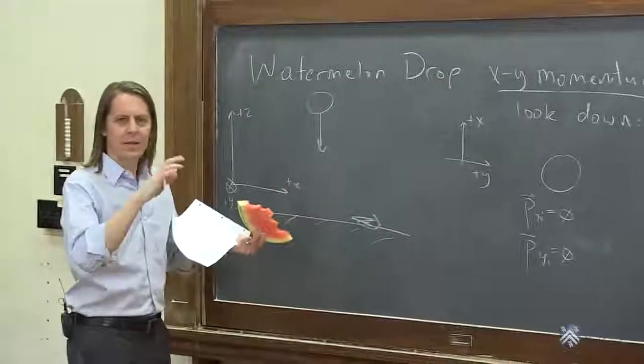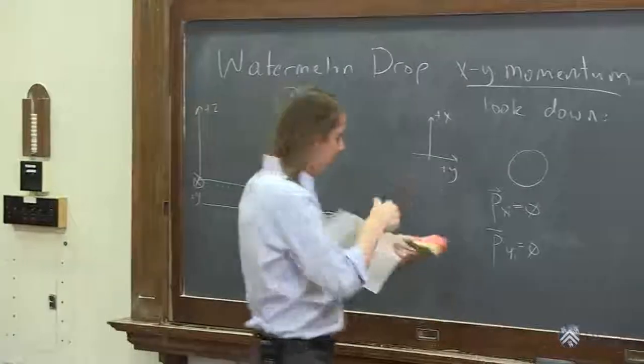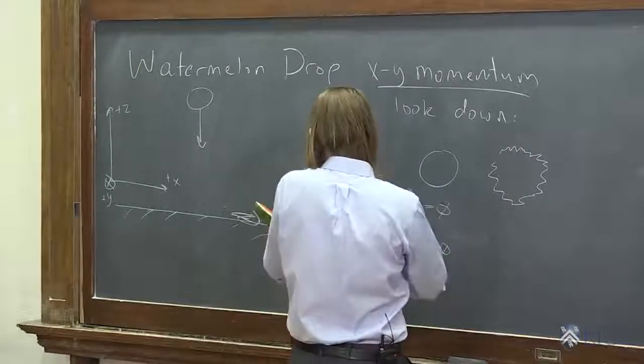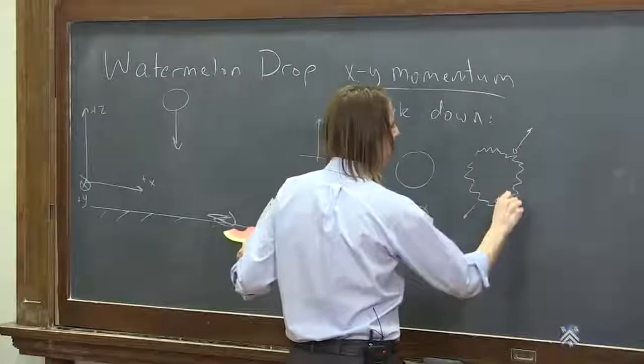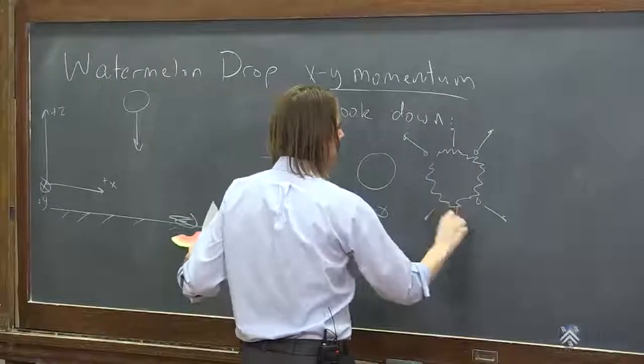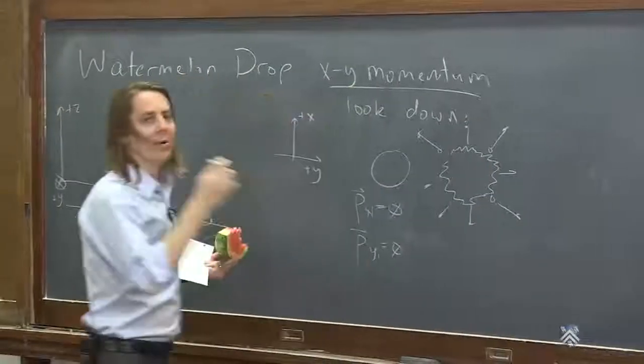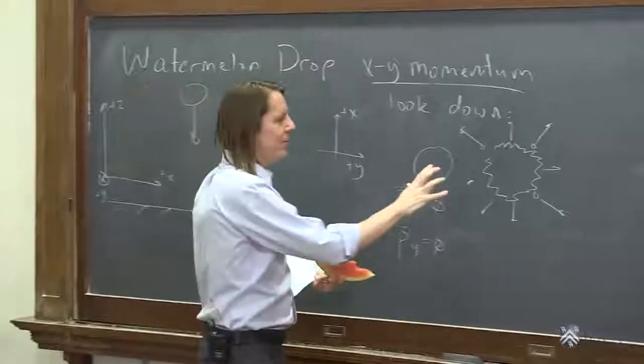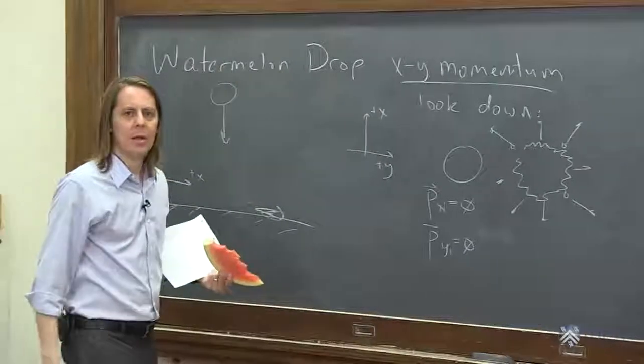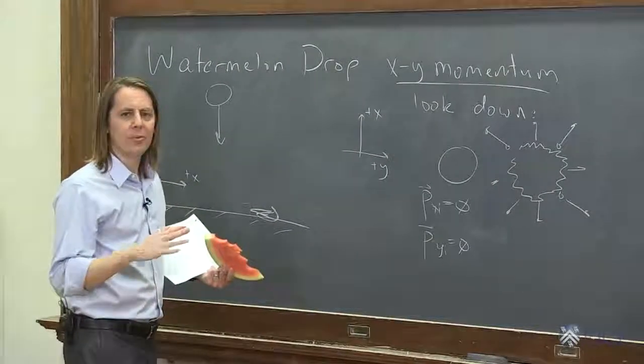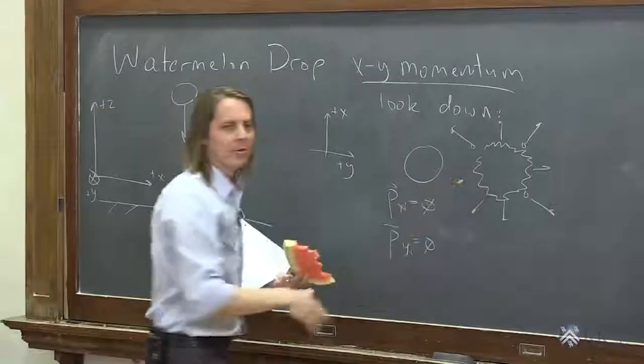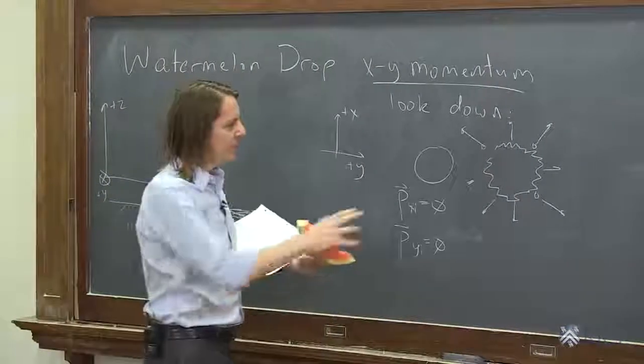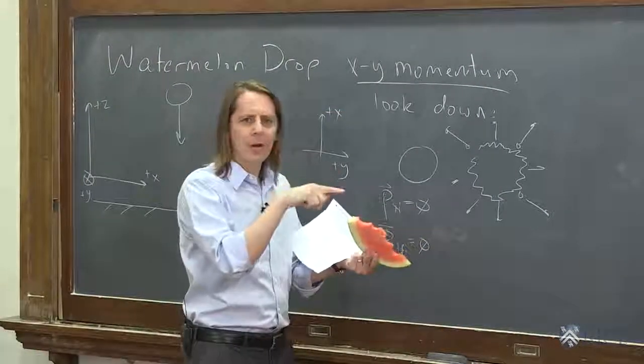And then it hit the ground and it smashed. Suddenly stuff goes everywhere. There's this explosion. Chunks flew off in all kinds of directions. Boom on the ground. So clearly, pieces of the watermelon have picked up momentum in x and y. But to conserve momentum, it has to remain zero. The vector sum of all the momentum vectors has to remain zero because we have to conserve momentum in x and we have to conserve momentum in y.